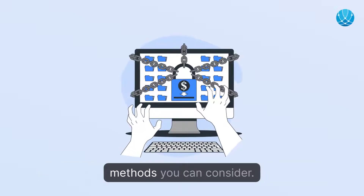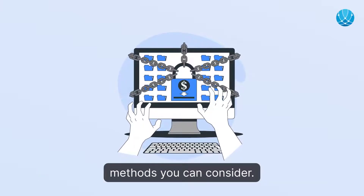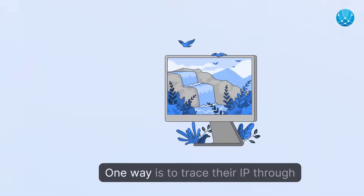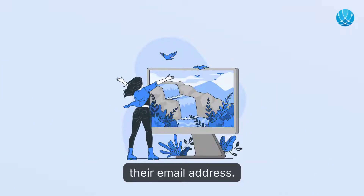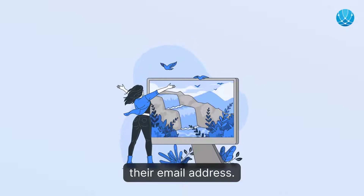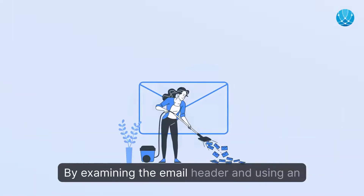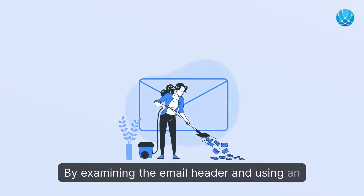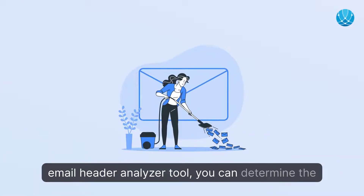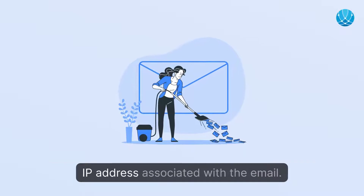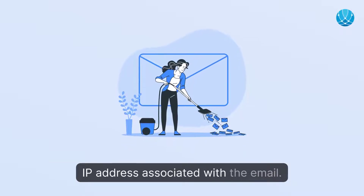To find someone's IP address, there are alternative methods you can consider. One way is to trace their IP through their email address. By examining the email header and using an email header analyzer tool, you can determine the IP address associated with the email.